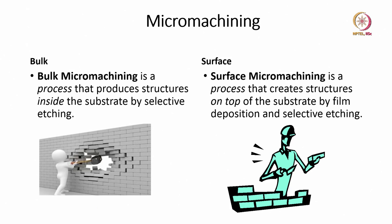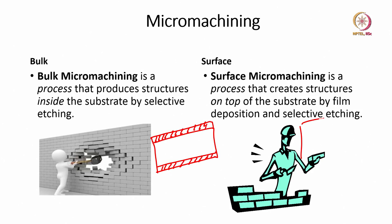Bulk micromachining is by etching the bulk of the wafer, while surface micromachining creates something at the surface. The definition: bulk micromachining is a process that produces structures inside the substrate by selective etching. For example, if you have an oxidized silicon wafer substrate and want to create a diaphragm, you need to selectively etch the substrate by etching the bulk of the silicon material.